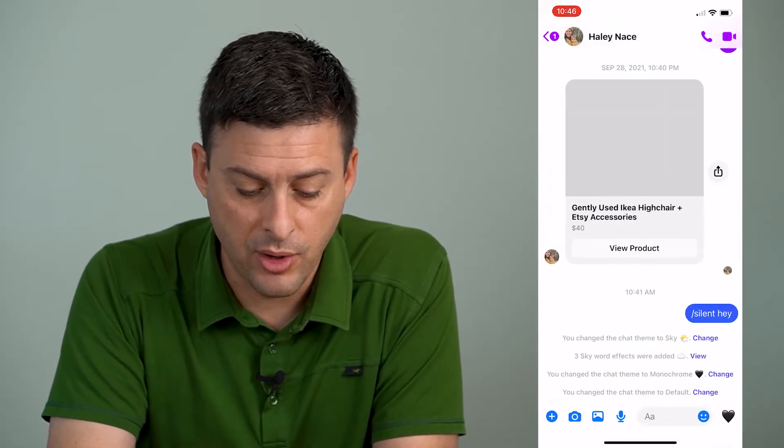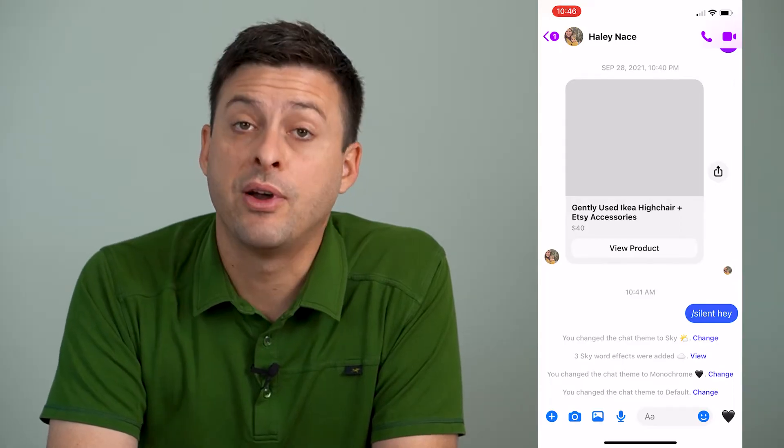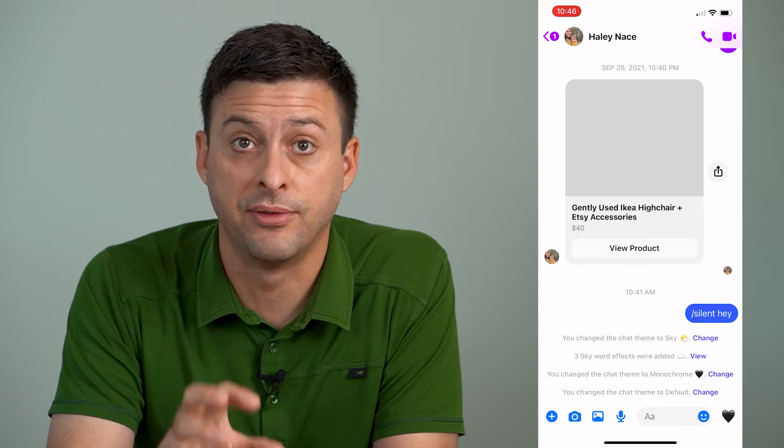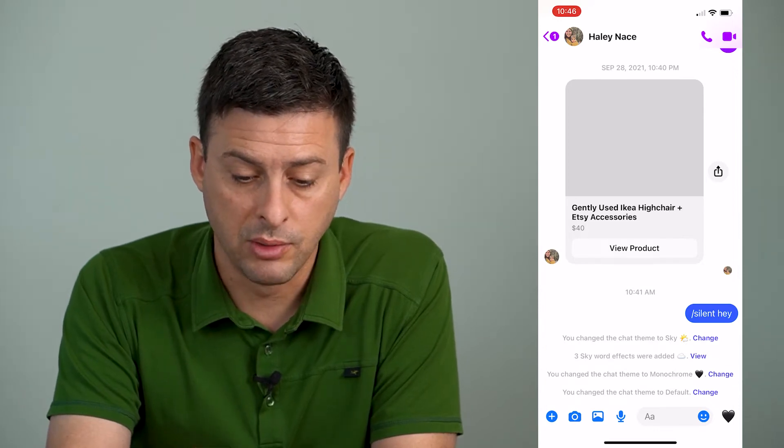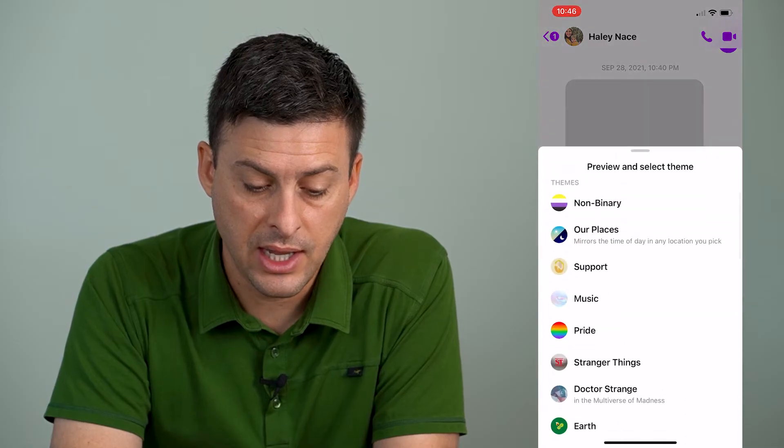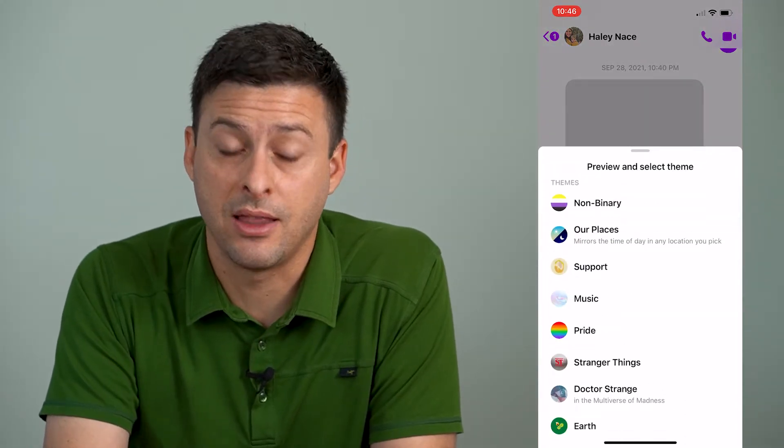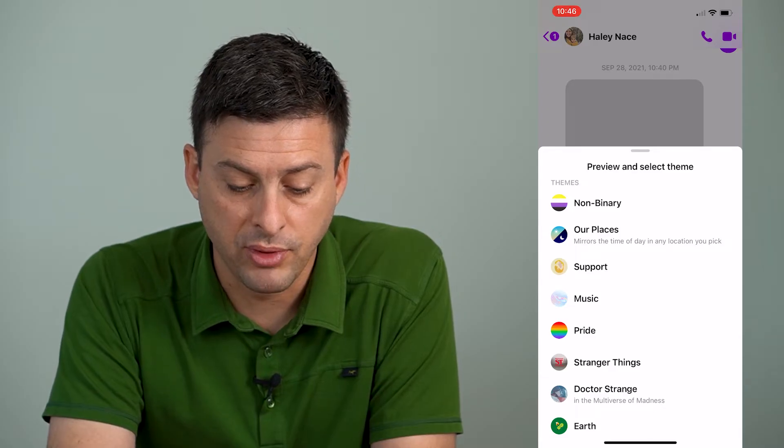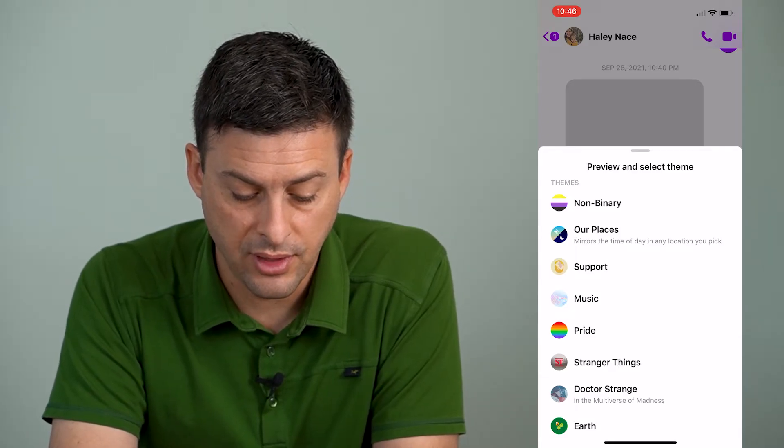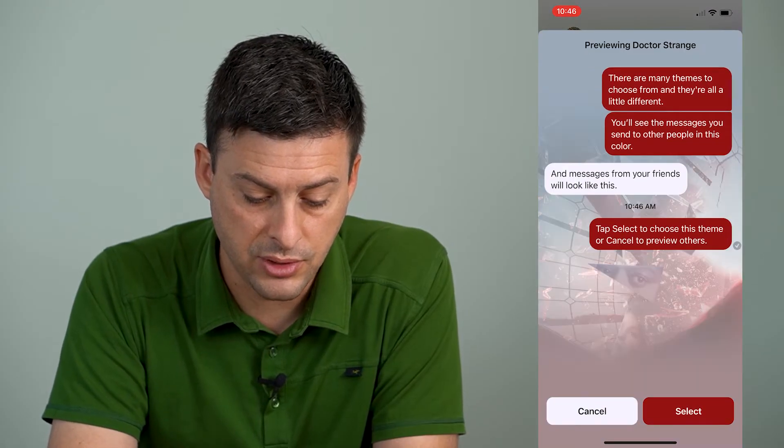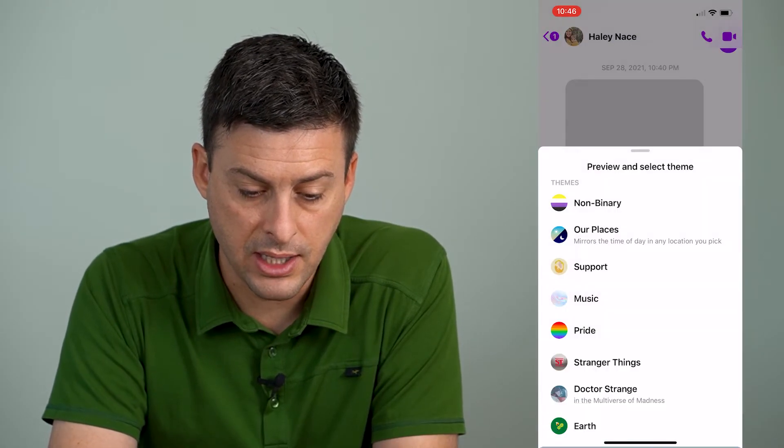Now, I'm going to just tap on one of these random ones. If I want to change the theme from the original default look, the blue and purple look, I can tap and hold in a blank space on that message itself. And it pops up with preview and select all these different themes. So I can choose Dr. Strange if I want to, and then at the bottom right hit select.